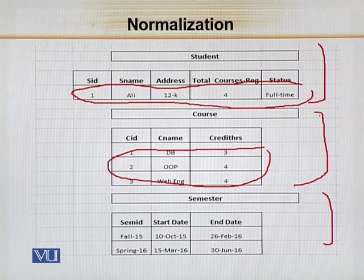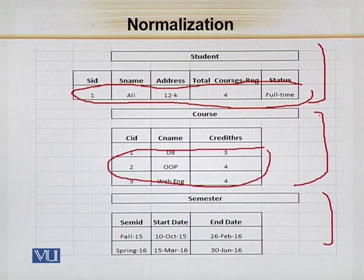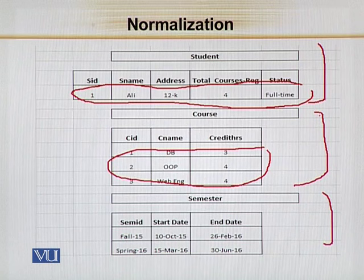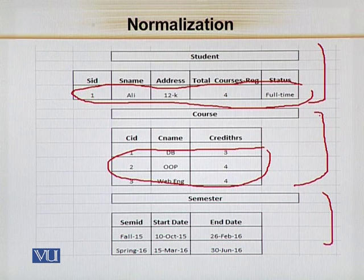अब जब हम इस unnormalized report को convert करने जाएंगे into 1NF, तो इसका basically मतलब यह है कि आपने हर group को non-repeating बनाना है — मतलब there should be no repeating group. यह basically 1NF की definition है. तो इसको achieve करने के लिए, first step आपका यह है कि you have to mark your primary keys — मतलब student के table में SID को primary key mark करेंगे, course के table में CID को primary key mark करेंगे, और semester के table में SEM ID को primary key mark करेंगे.